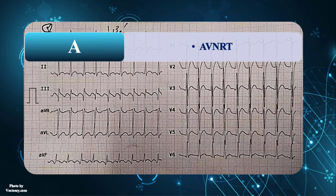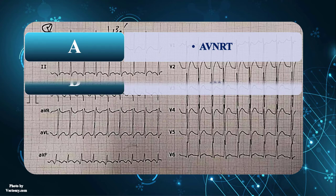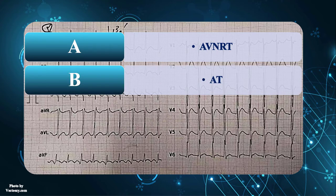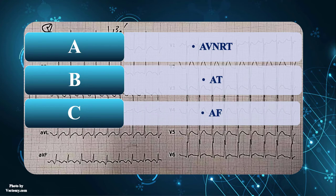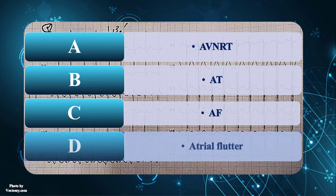Which of the following is the correct answer? 1. AV nodal reentrant tachycardia. 2. Atrial tachycardia. 3. Atrial fibrillation. 4. Atrial flutter. What are you going to do for this patient?